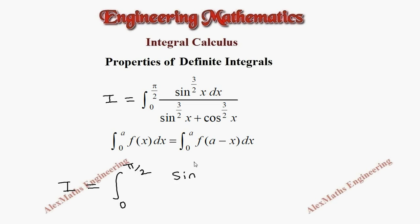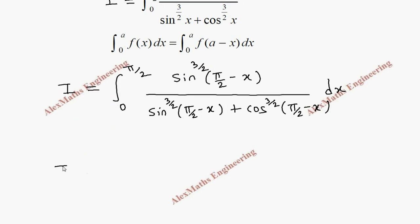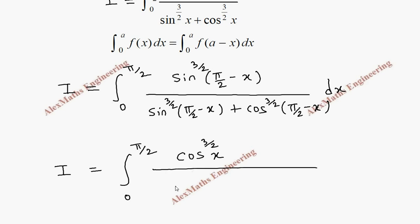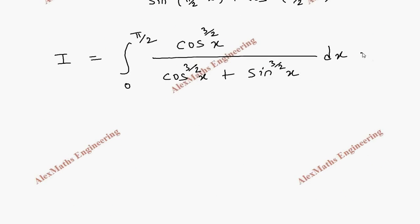In this problem, a minus x is π/2 minus x. So we get sin^(3/2)(π/2 minus x) in the numerator, and in the denominator sin^(3/2)(π/2 minus x) plus cos^(3/2)(π/2 minus x) dx. When there is π/2 minus x, sine becomes cos and cos becomes sine, so this becomes cos^(3/2)(x) divided by cos^(3/2)(x) plus sin^(3/2)(x) dx.